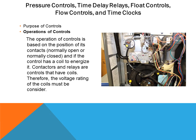The operation of controls is based on the position of their contacts — normally open or normally closed. If the control has a coil to energize it, such as contactors and relays, the voltage rating of the coil must be considered.